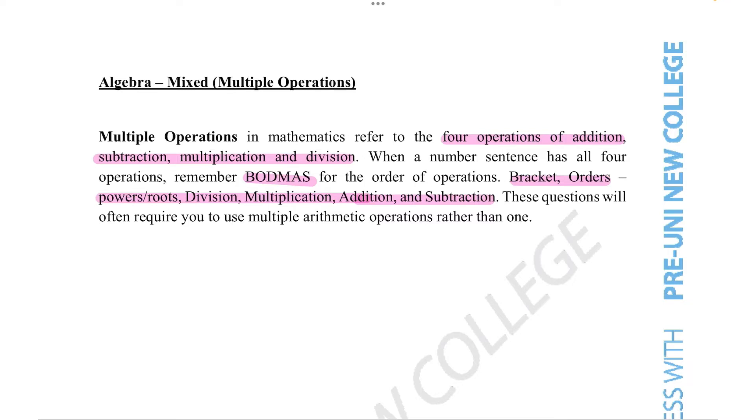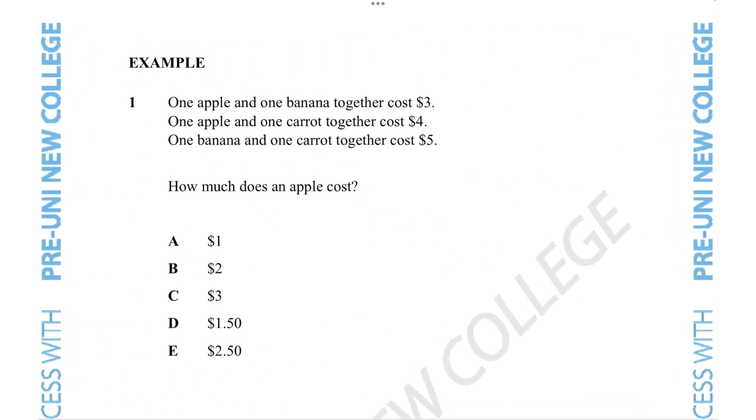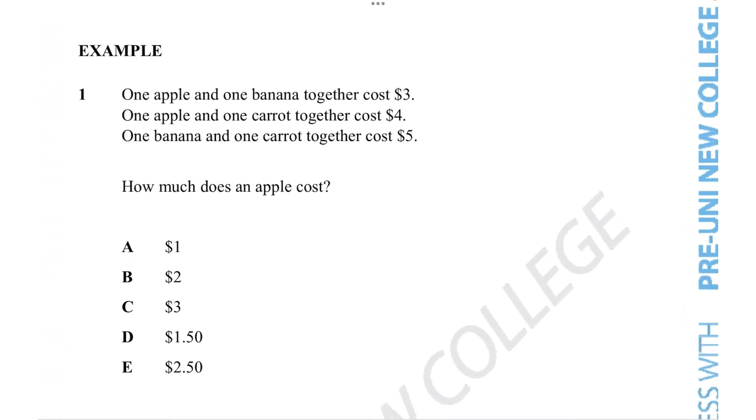We're going to take a look at a quick example of what a mixed operations question can look like. Obviously there are plenty of different examples, so the big takeaway for this video would be to understand the skills you need to do these questions rather than just getting the answer. For this particular example, we're given the costs of various different fruits: an apple and a banana costing $3, an apple and a carrot costing $4, and a banana and one carrot costing $5.